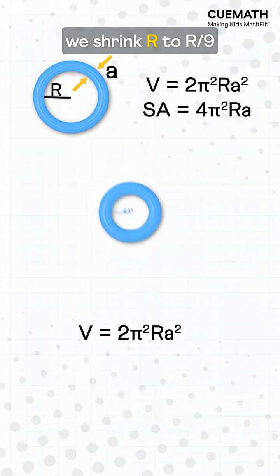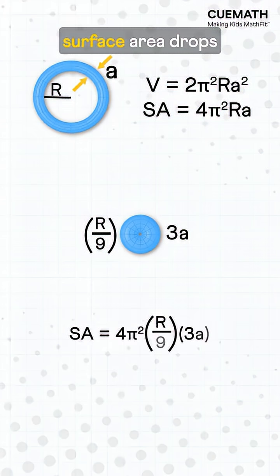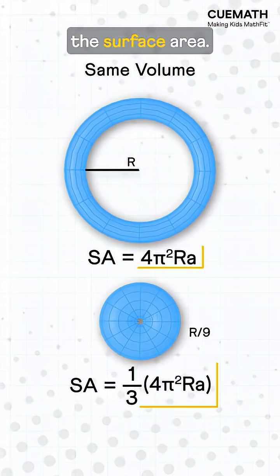On the other hand, if we shrink r to r/9 and bump a to 3a, volume still stays the same, but the surface area drops to one-third. So the smaller the radius, the less the surface area.